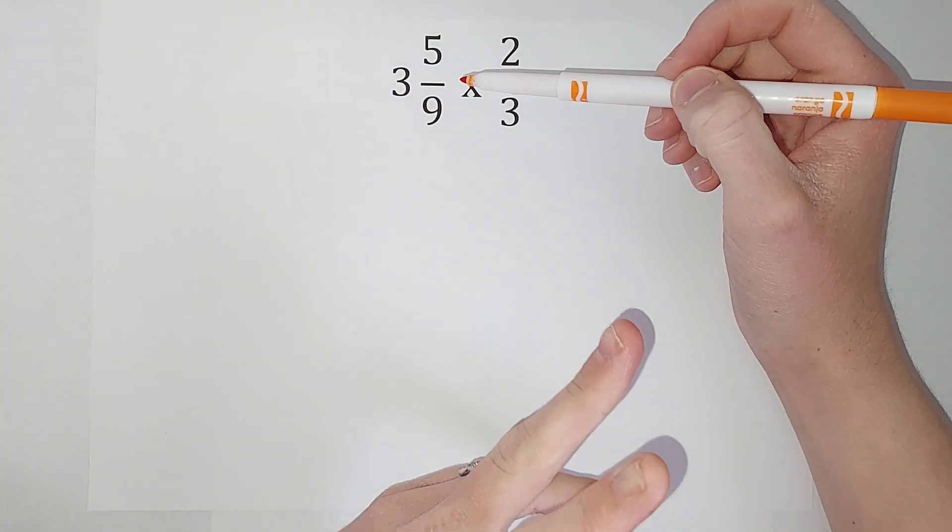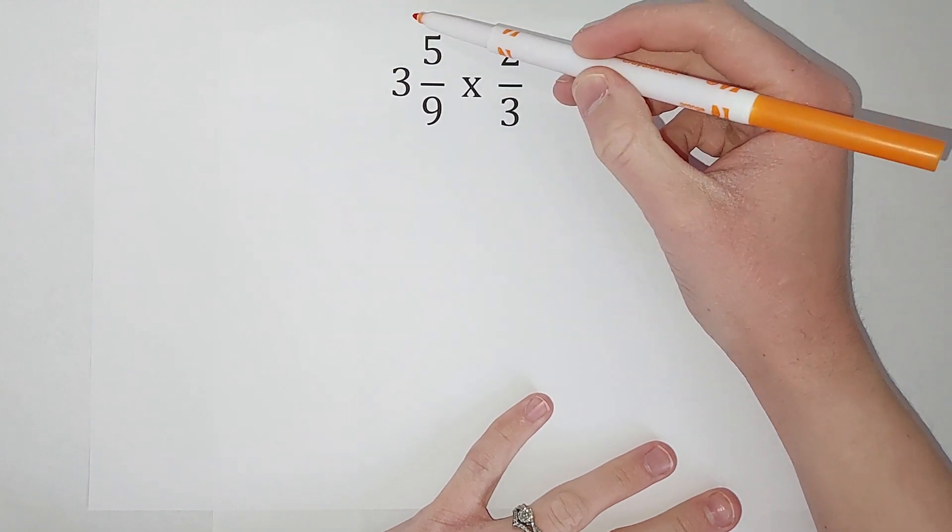It's just easier to work with that way. When it's an improper fraction, that means the top is bigger than the bottom, and apparently that is improper.